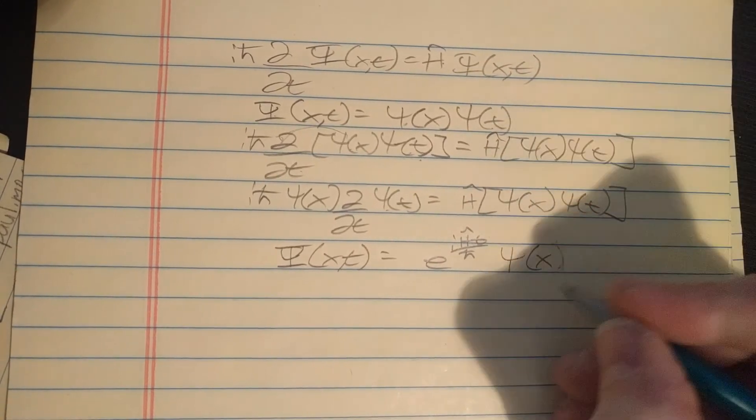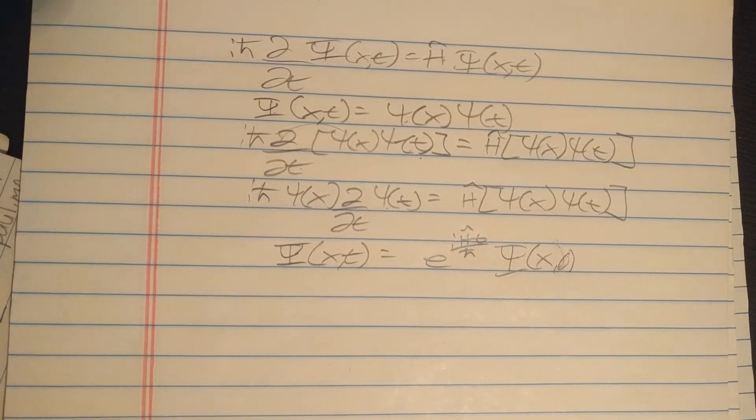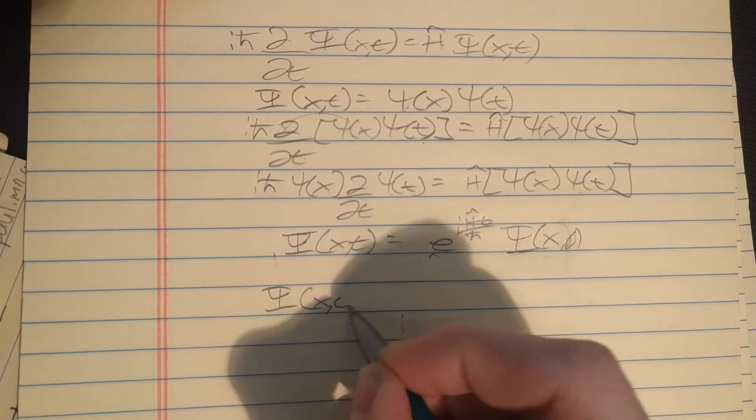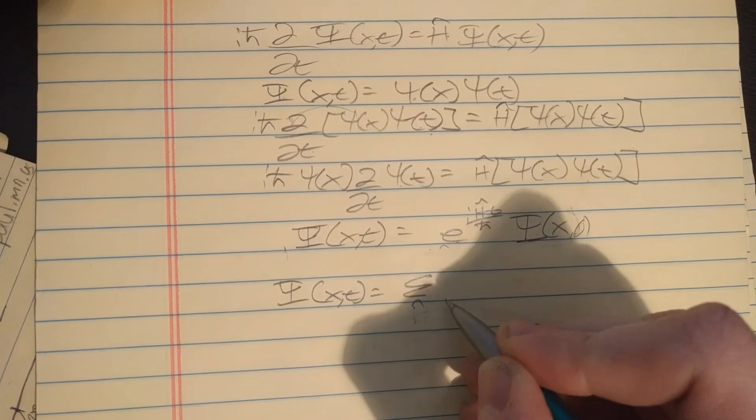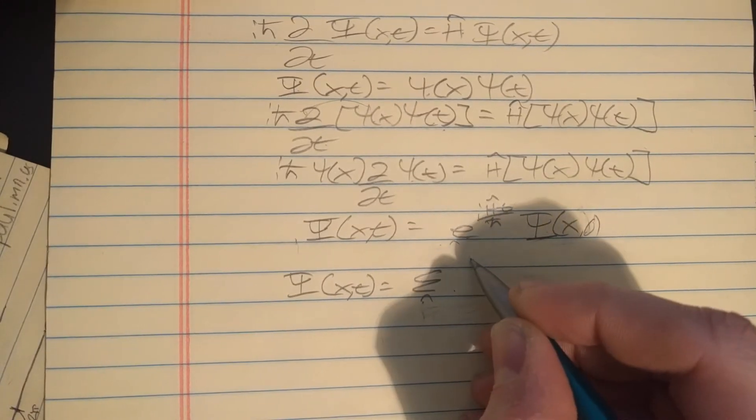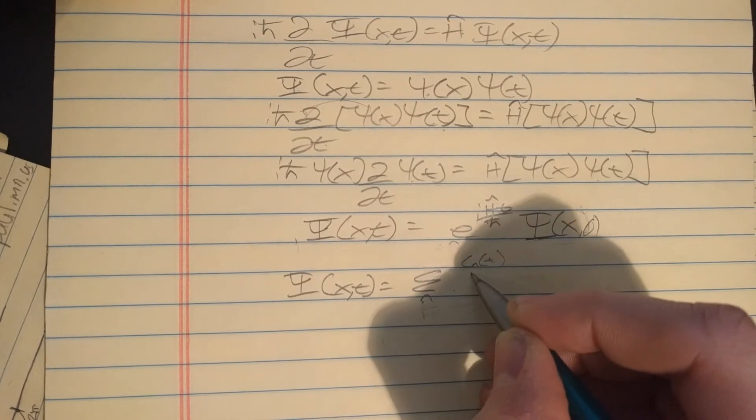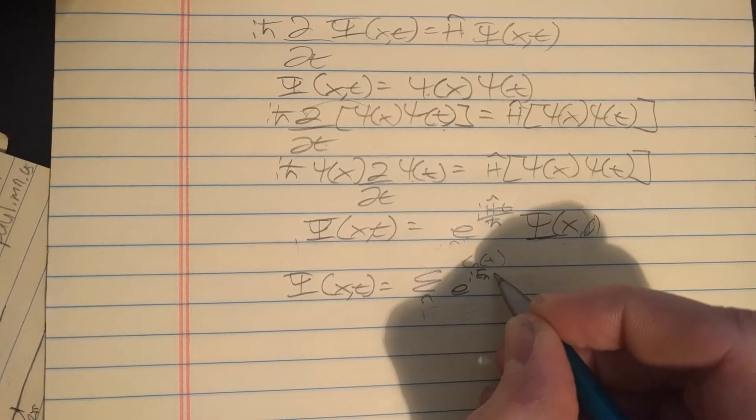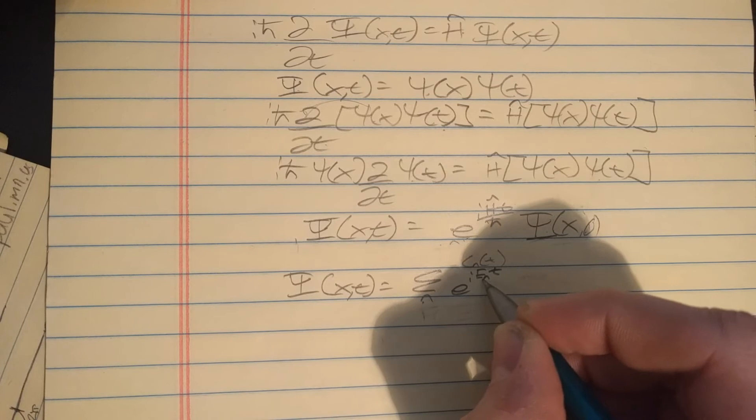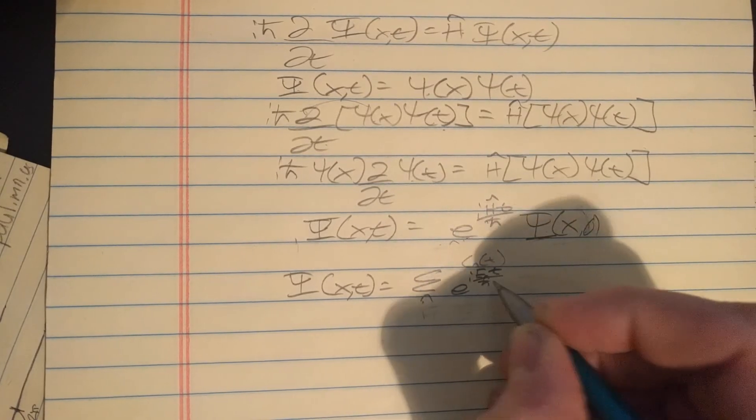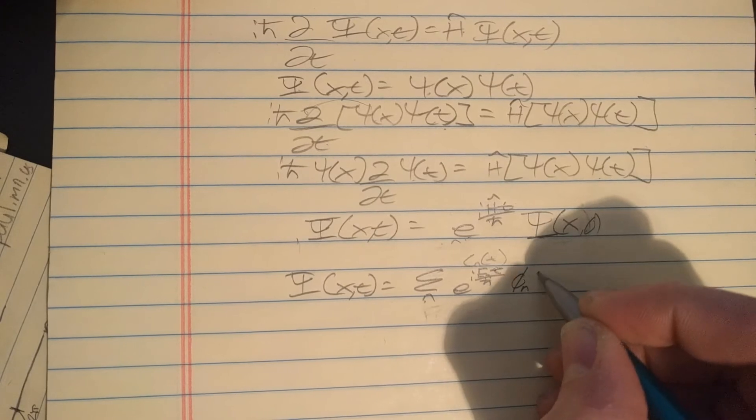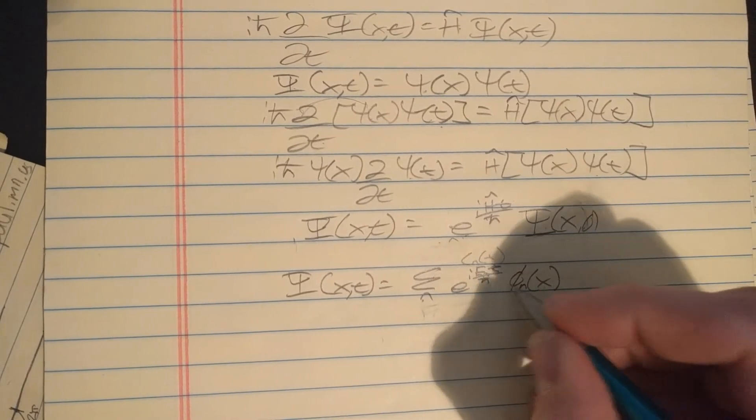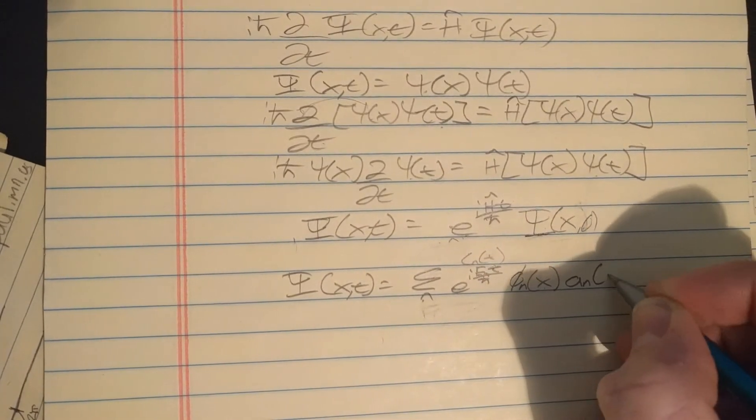We can rewrite this part as psi of x and zero, and we can just say it's the general state. So we can rewrite our most general state like we did on the previous page. We used to have c sub n here which depended on time, but now that c sub n breaks up into this part e to the i E sub n, because we're doing the linear combination.